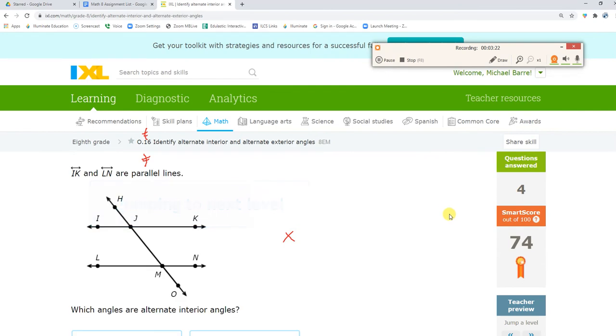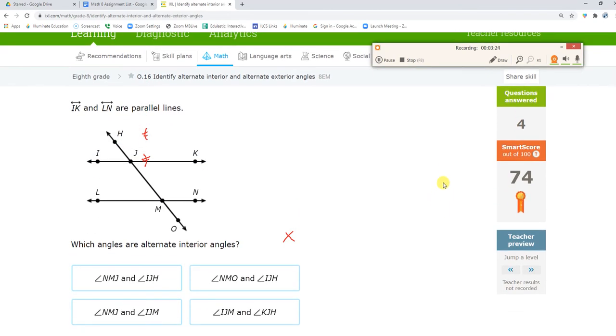Okay, so instead of having the first angle all the same, they're mixing up the first angle, so it just means we have to think a little bit harder. Angle NMJ. Let's try that one first. His alternate interior would be angle IJM. Oh, I got it right. It's right there. I don't even have to look at the other ones. I got it right on the first try.